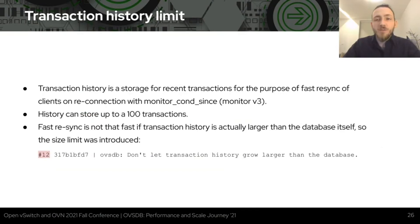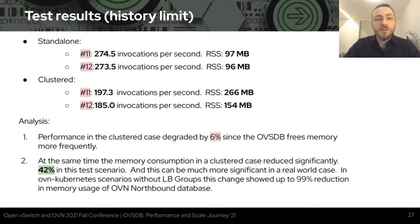While implementing all previous changes, memory profiling pointed to transaction history, which accumulates a large percentage of all memory allocated in a cluster database. History is where all committed transactions end up for fast resync of reconnected clients. While history is limited to only 100 transactions, if transactions are big enough, 100 transactions can hold more data than the whole database itself — a problem for memory usage that also makes fast resync not that fast. Patch number 12 prevents transaction history from growing larger than the database by introducing a size limit, reducing memory consumption by 42% in this case, which can be even more significant in real-world scenarios.